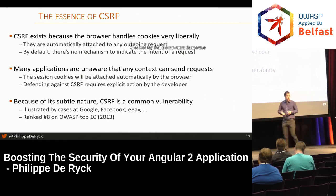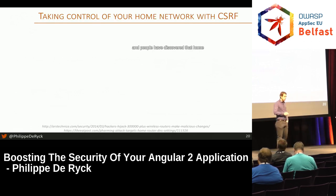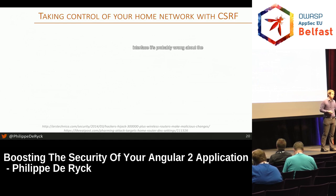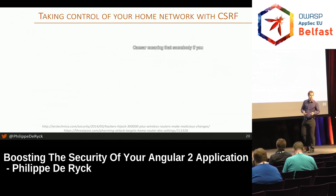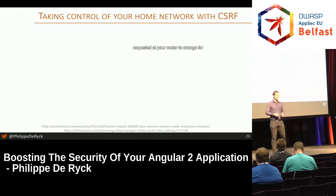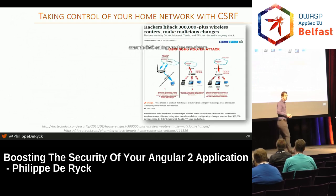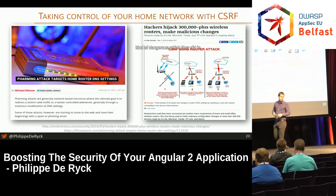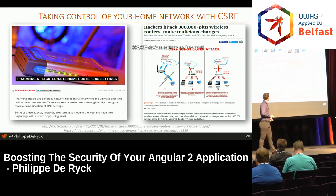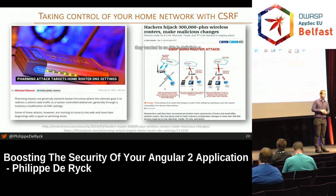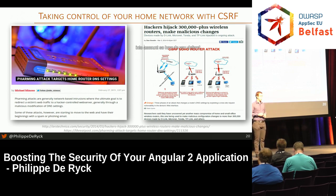There's an even more dangerous kind of CSRF attack. Home routers with web interfaces are apparently not very secure. Someone visiting a web page can launch requests to your router to change DNS settings — which happened in South America, where more than 300,000 devices had their settings changed to reroute DNS traffic and serve users fake pages. This is a real threat.